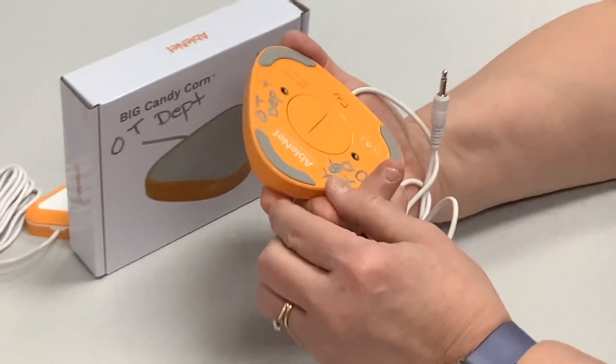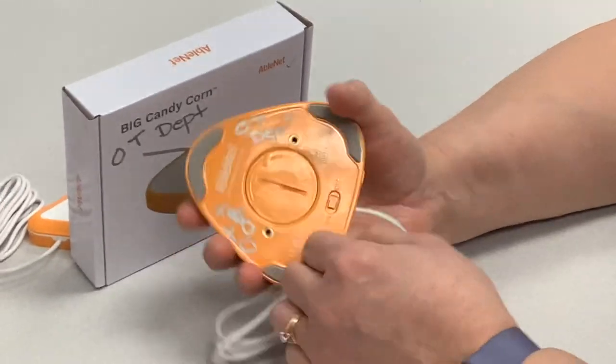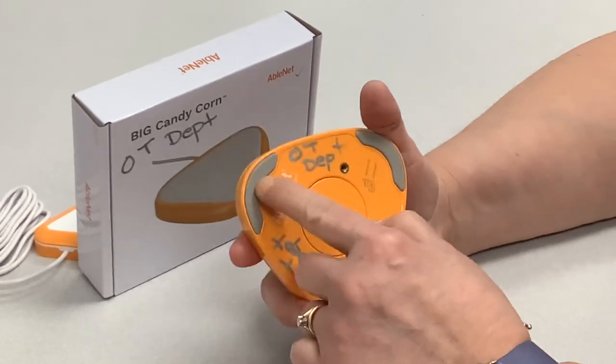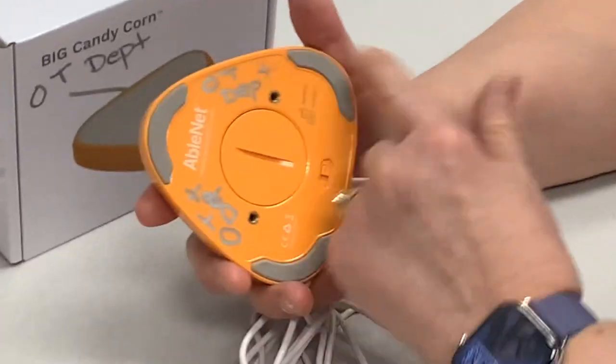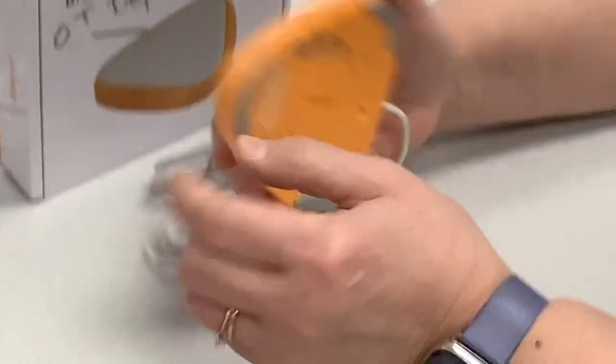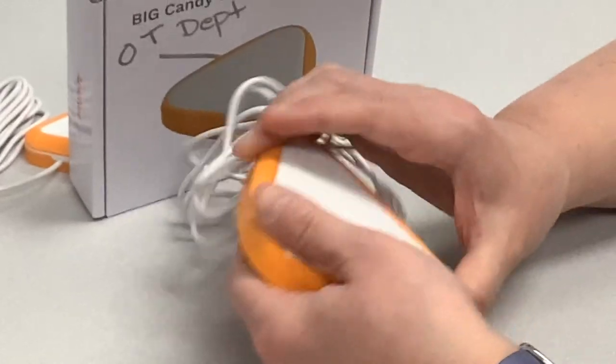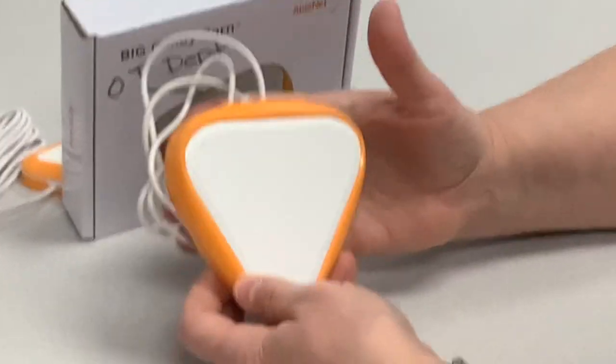So these are just good things to think about when you have buttons and power buttons. You've got a variety of mounting and stabilizing solutions on the back of this so it doesn't skid across, or I can bolt this onto something, or I could put velcro on it. So that's our big candy corn switch.